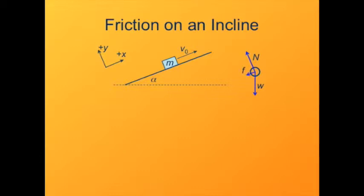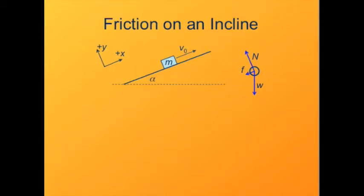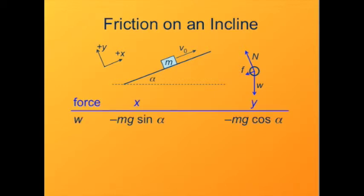Let's figure out what the net force is on this object so we can determine its acceleration. Since these are vectors, we have to worry about their extents in two directions, x and y. So now we'll look at the x and y components of the weight, the normal force, the force of friction, and their sum, the net force.